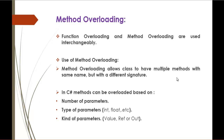Function overloading and method overloading are used interchangeably — both are the same. Method overloading allows a class to have multiple methods with the same name but with a different signature. In C-Sharp, methods can be overloaded based on three types: the number of parameters, the type of parameters, and the kind of parameters. We will jump into Visual Studio and explore them.